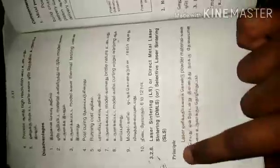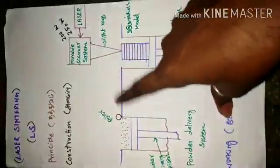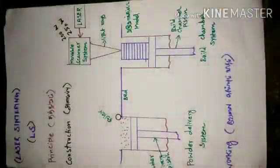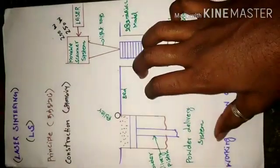So if you want to do the first thing, you need to put a diagram on the construction. The components are: the powder delivery system, the roller system, the build chamber, and the scanner system. The next step is the process, then the advantages, disadvantages, and applications. This is the same method as 3D printing. Thank you.